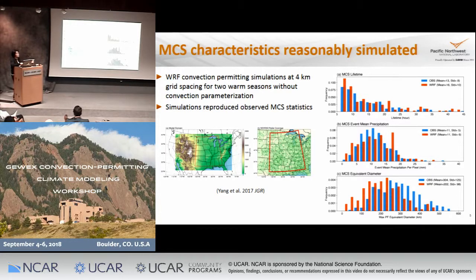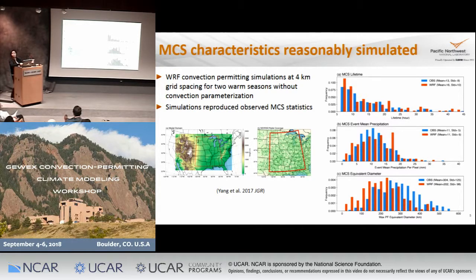We are particularly interested in these longer-lasting MCSs — typically around 20 hours or so — because these are the ones responsible for more intense precipitation. Using this simulation, we then look into why some MCSs can last that long, because based on observation, those are the ones that have been changing the most in the last 35 years.